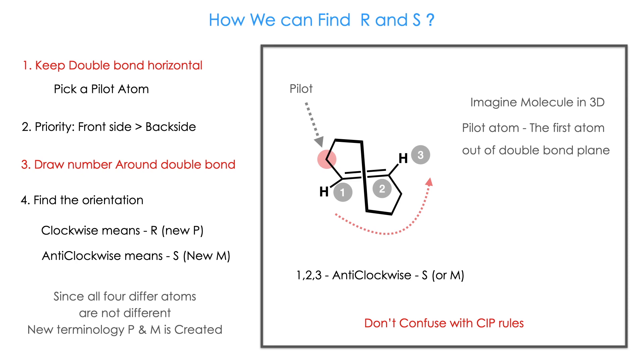Finding the configuration is very easy. You have to follow the step-by-step rules. First rule is you have to keep the double bond horizontal in the cyclooctene, otherwise you would make a mistake. First you have to pick the pilot atom.